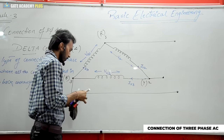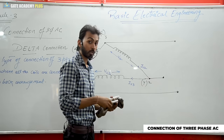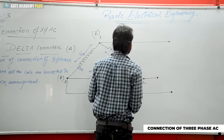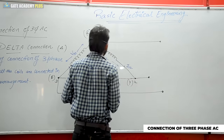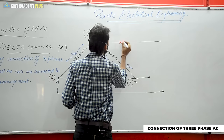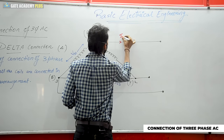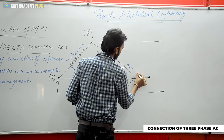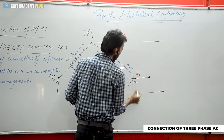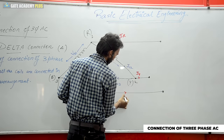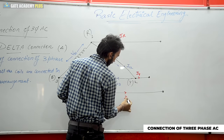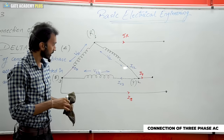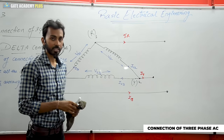So the line currents are IR, IY, and IB — I have everything written. All are line currents. Now if I express the line voltages: this should be between R to Y — VRY; Y to B — VYB; and VBR. So the phase sequence is established. All line voltages are written in red. All are line currents.